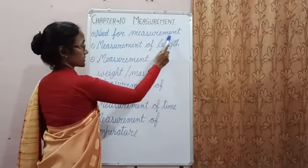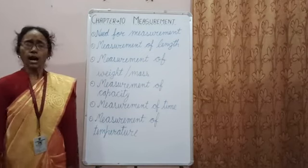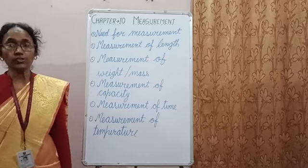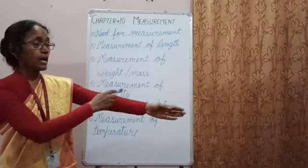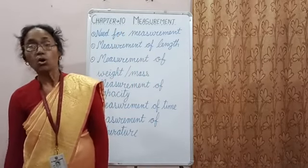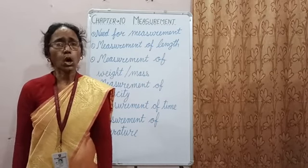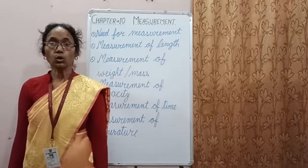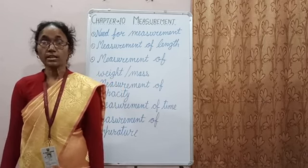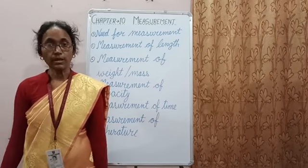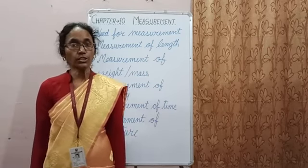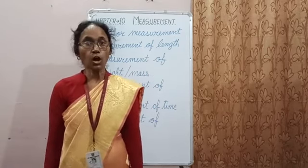Need for measurement: Earlier, people often used their hands and feet for measuring lengths. They used hand for handspan and cubit, and foot for foot span. All these units of measurement were called non-standard units, as the length of these body parts differs from person to person and hence were not reliable. Thus, there is a need to have a standard unit for measuring things.